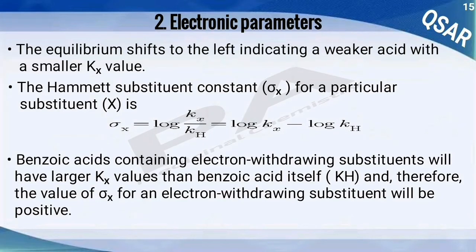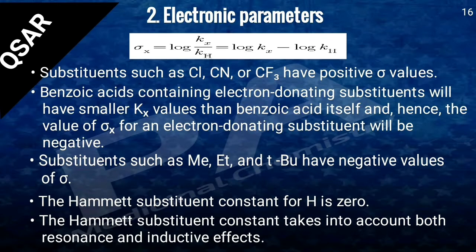The Hammett substituent constant sigma X for a particular substituent X is: sigma X equals log(kX / kH), which equals log(kX) minus log(kH). If benzoic acid has electron-withdrawing substituents with larger kX values than benzoic acid itself, the value of sigma X for electron-withdrawing substituents would be positive. Substituents such as Cl, CN, or CF3 have positive sigma values. Electron-donating substituents such as methyl, ethyl, and tertiary butyl have negative sigma values. For hydrogen, the sigma value is zero. This Hammett substituent constant takes into account both resonance and inductive effects.